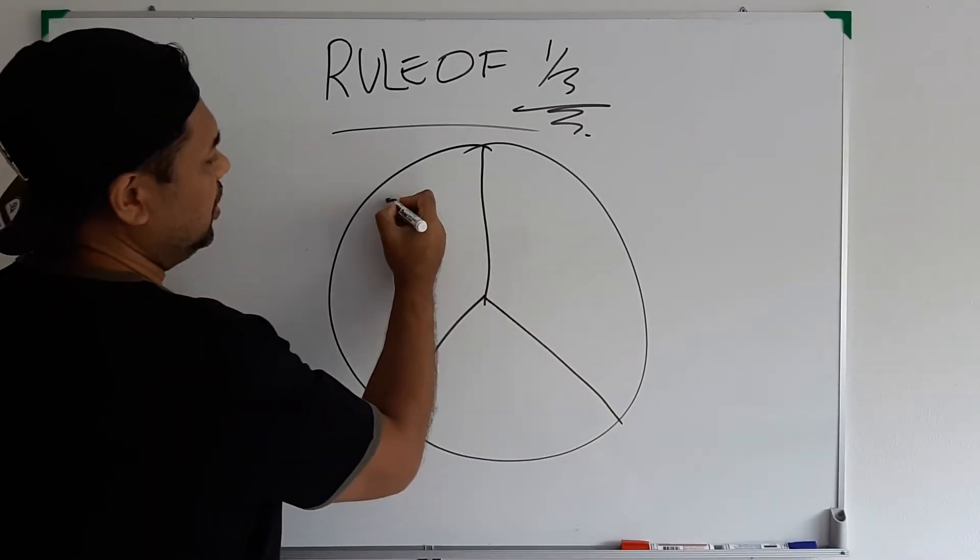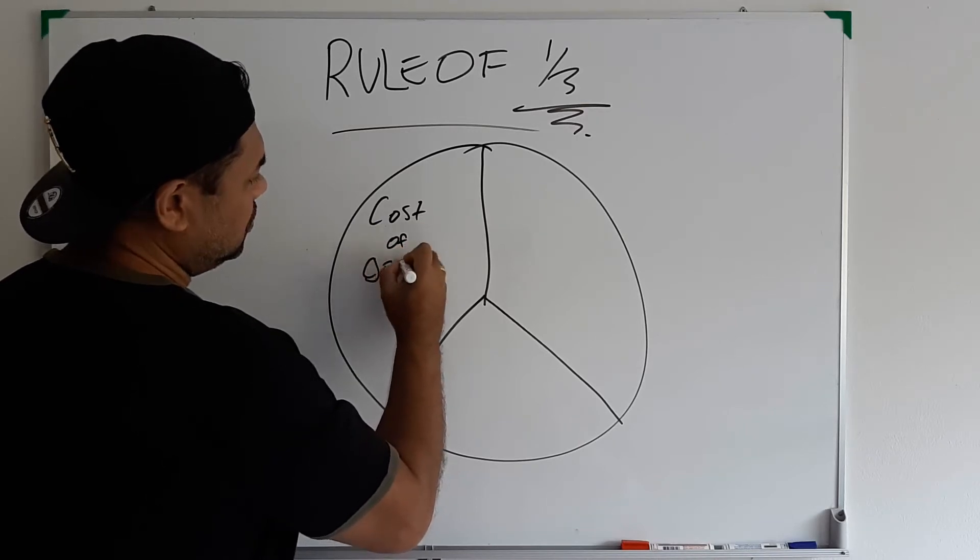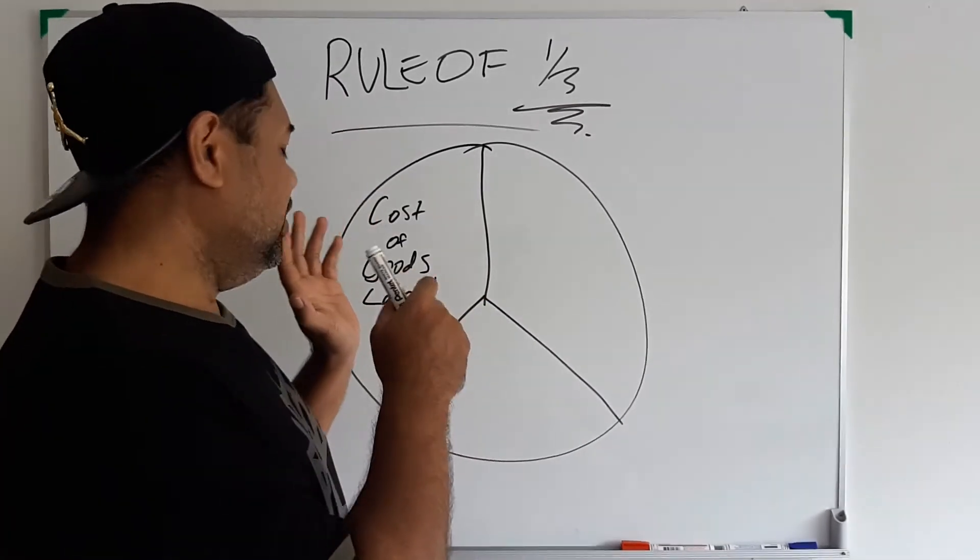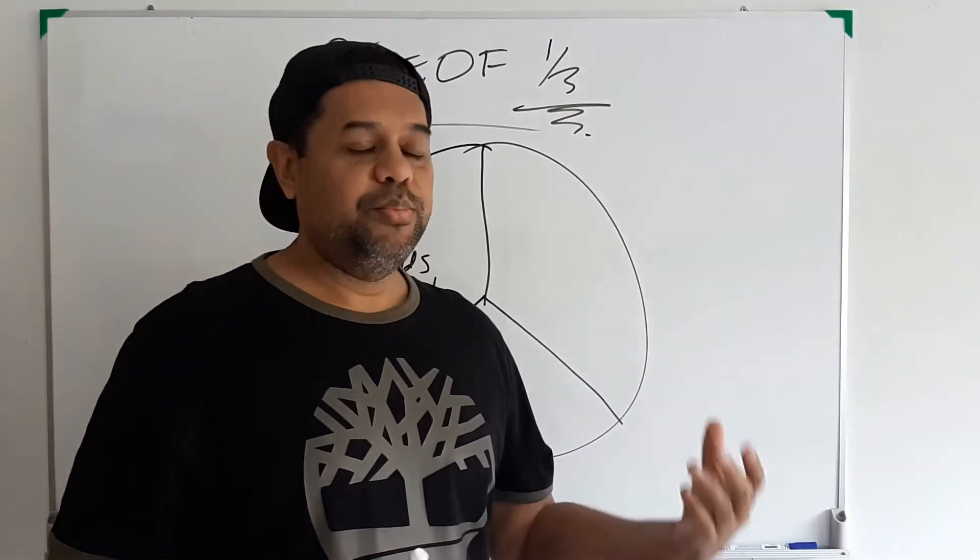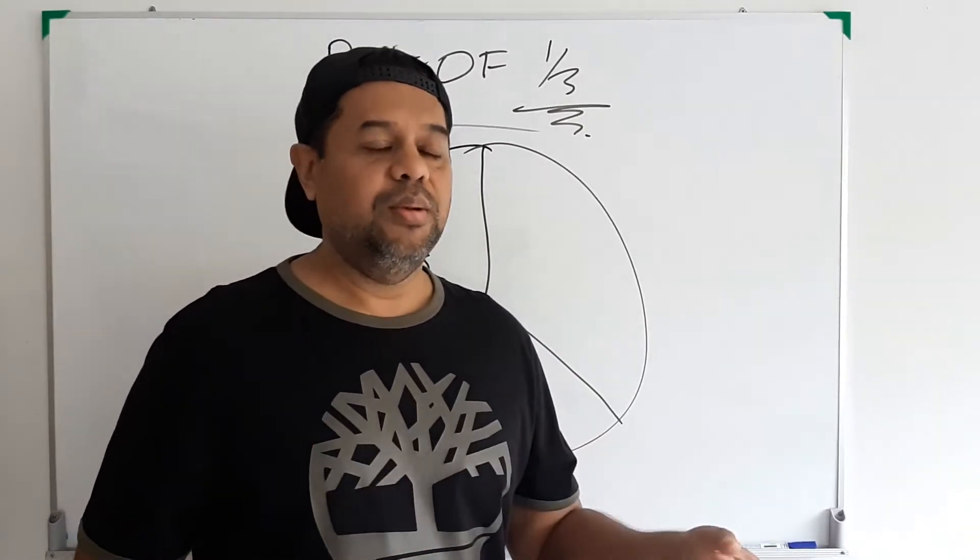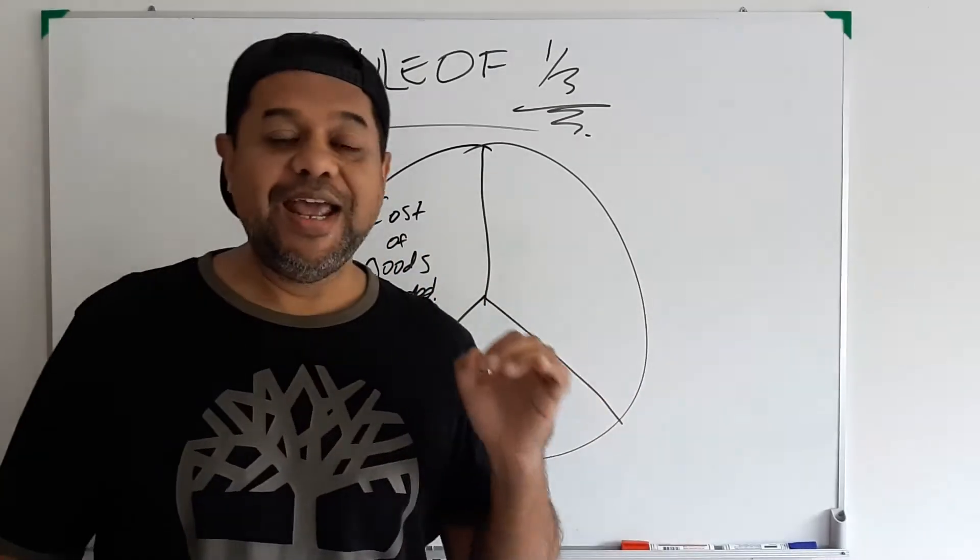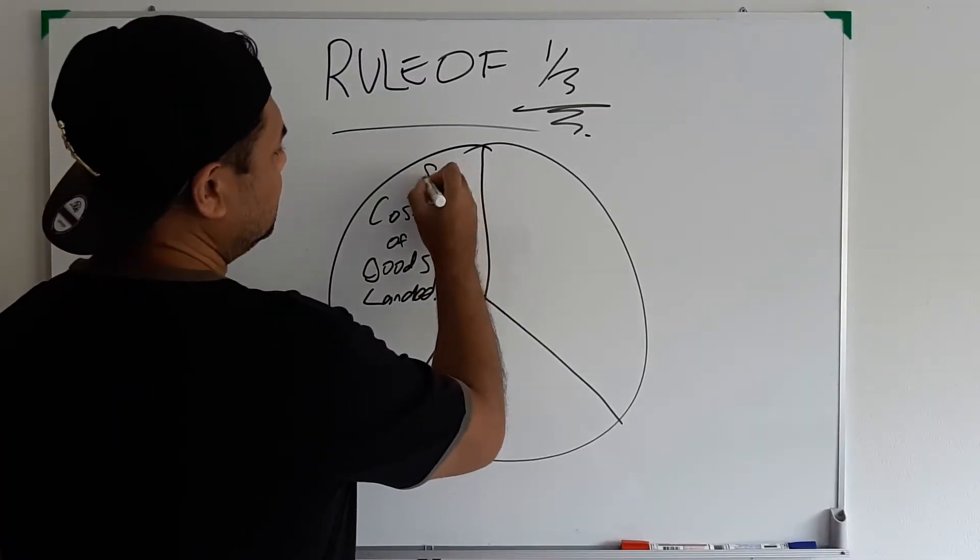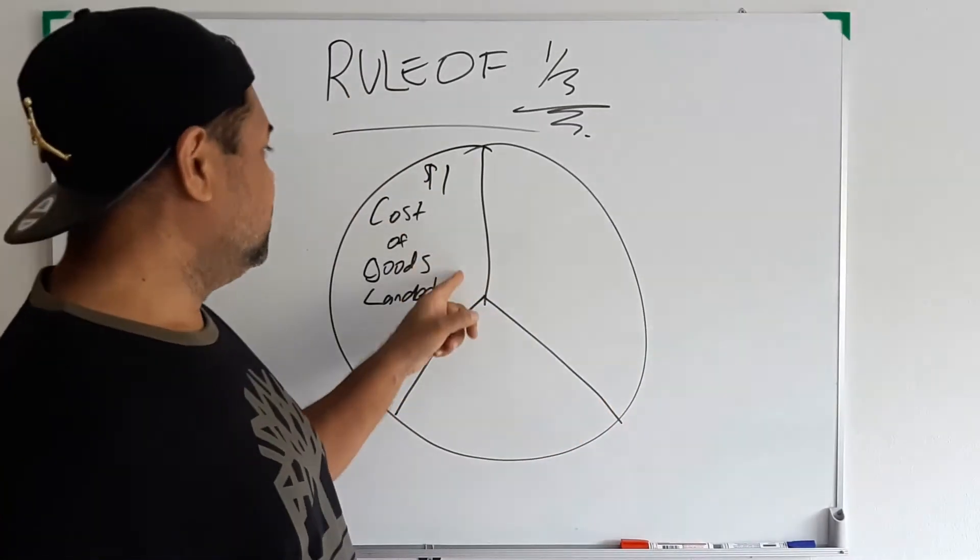This first third is your cost of goods landed. The cost of goods landed is basically, provided that you've done your research on Amazon, you've found a niche that's profitable, you found a product, you've done your research, you've gone out and sourced the product that is differentiated. Now you've gone and got the product and you found that the cost of goods landed to Amazon is basically, to keep it simple, one dollar.